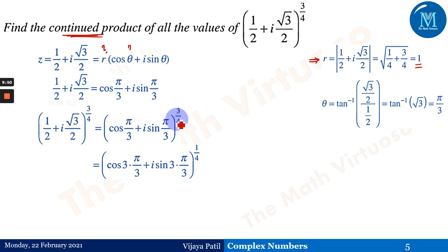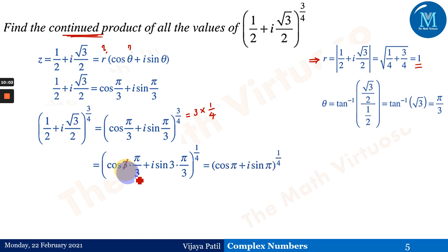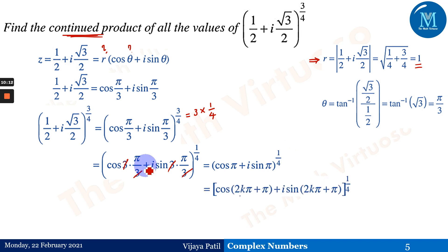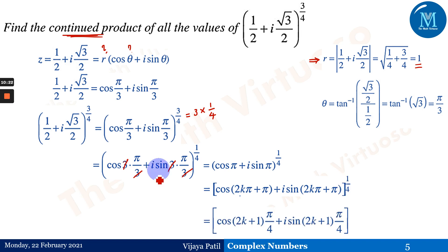Applying the periodicity of cosine and sine, we write (cos(2kπ + π))^(1/4). By De Moivre's theorem, the 1/4 comes into the angle, giving cos((2k+1)π/4) + i sin((2k+1)π/4). This is the general form of the roots.